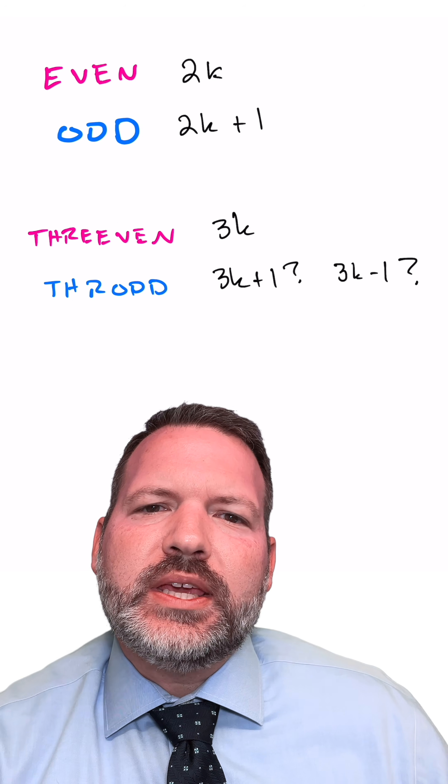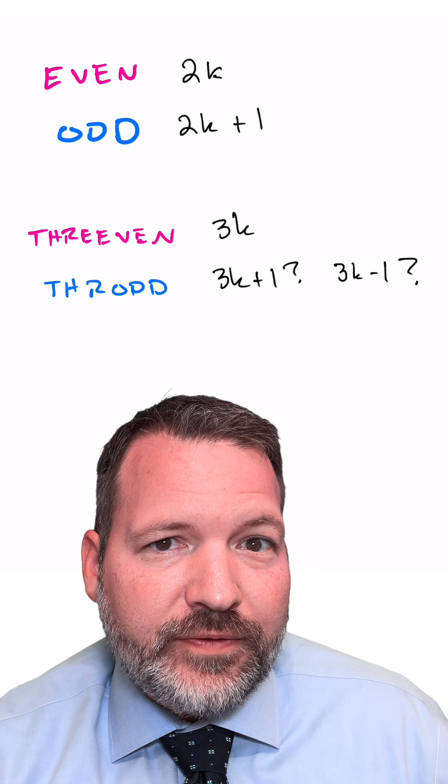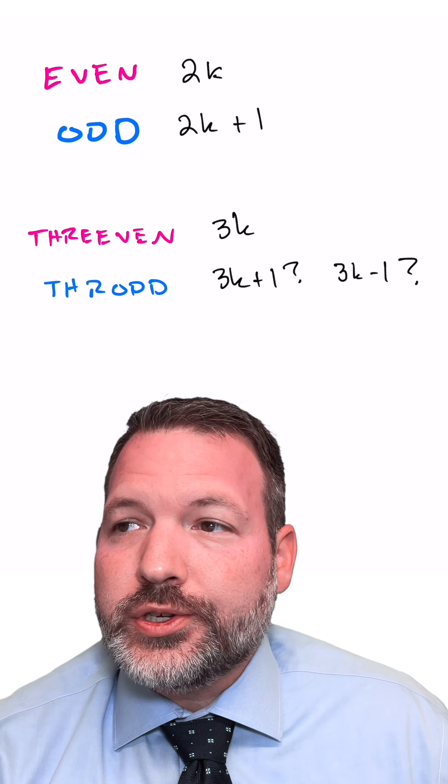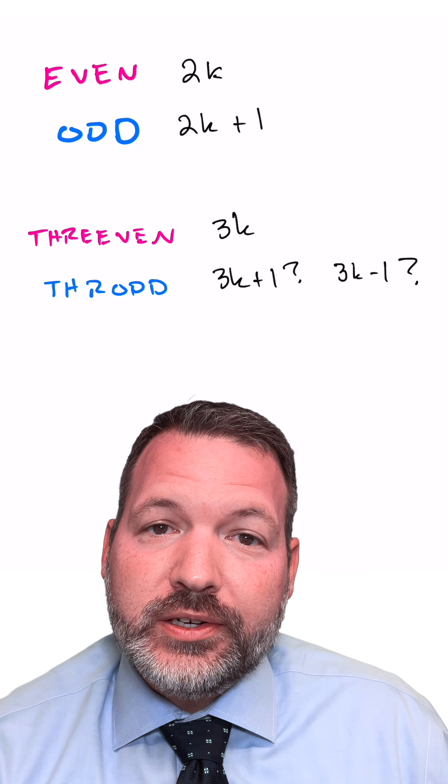You may have heard this phrase, two is the only even prime number, which of course is true in as much as prime numbers by definition are the numbers that are only divisible by themselves and one. So of course all the prime numbers live among the numbers that are not divisible by two, other than two itself.